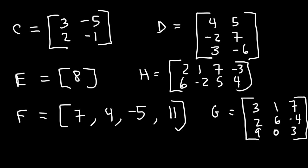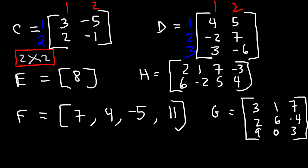Matrix C has two rows and two columns, so it's a 2 by 2 matrix. This is a square matrix because the number of rows and columns are the same — just like a square where all sides are equal. Matrix D has three rows and two columns, so it's a 3 by 2 matrix.